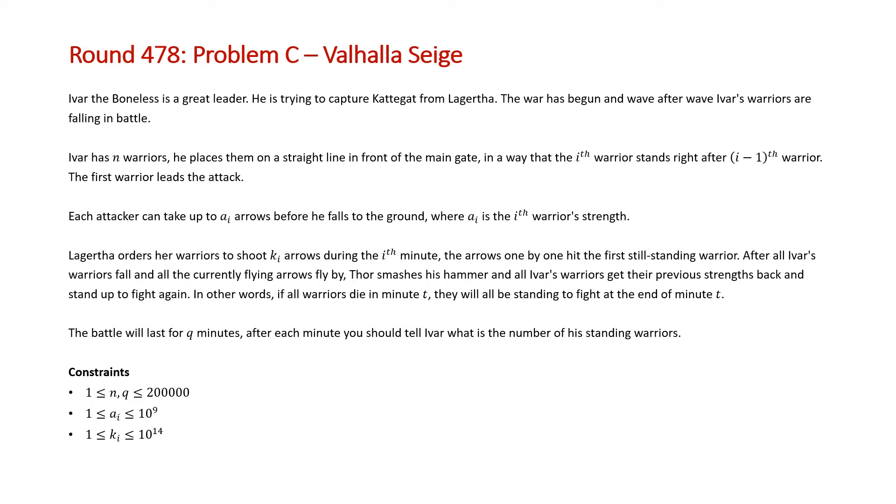The battle will last for Q minutes. After each minute you should tell Ivar what is the number of his warriors standing. Note that the constraints for this problem: the number of warriors and the number of turns is going to be between 1 and 200,000. The strength of each warrior can be up to 10^9 and the number of arrows unleashed in each turn is going to be up to 10^14.